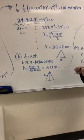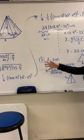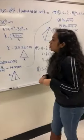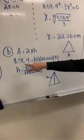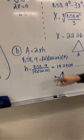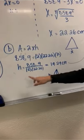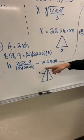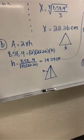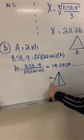After finding x, we went back to our equations and plugged in the value. Using A = 2xh, with A = 858.9 and x = 22.26, we solved: 858.9 = 2 times 22.26 times h. Isolating h gave us h = 858.9 over (2 times 22.26), which equals 19.29 centimeters.